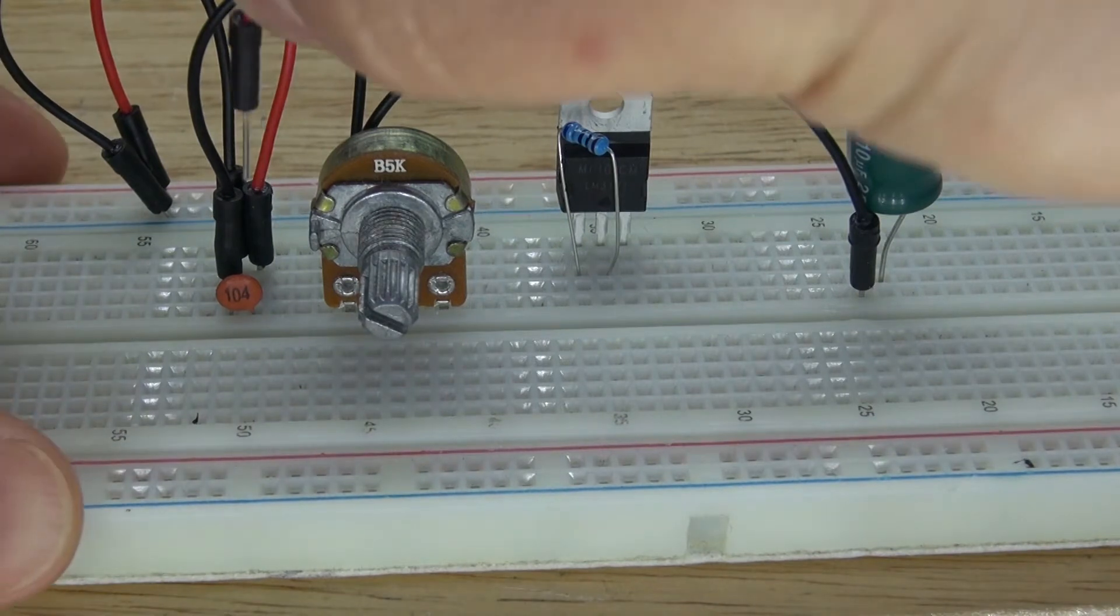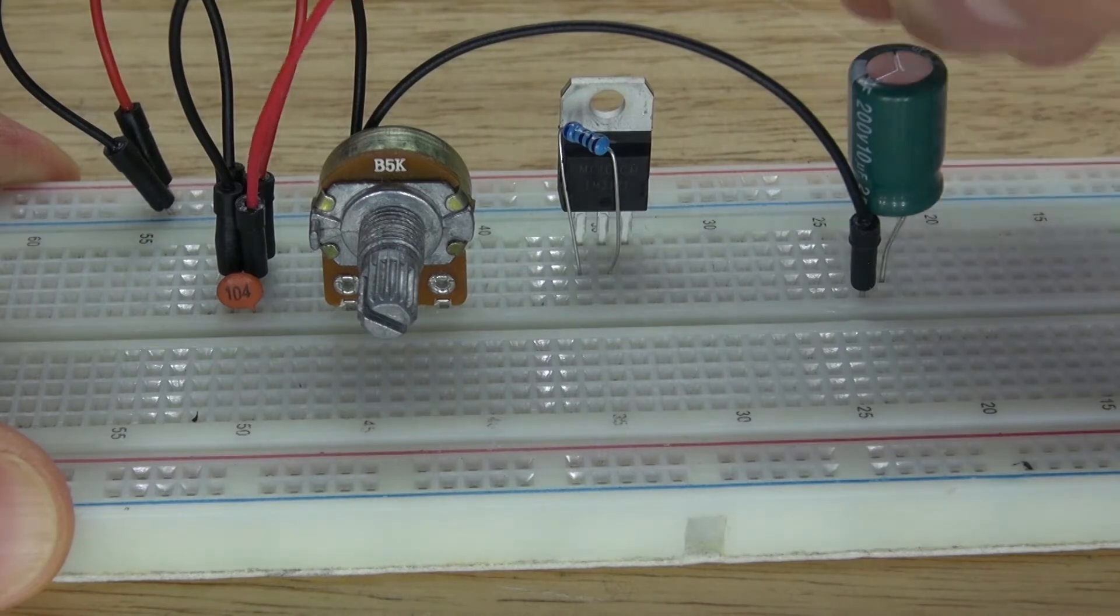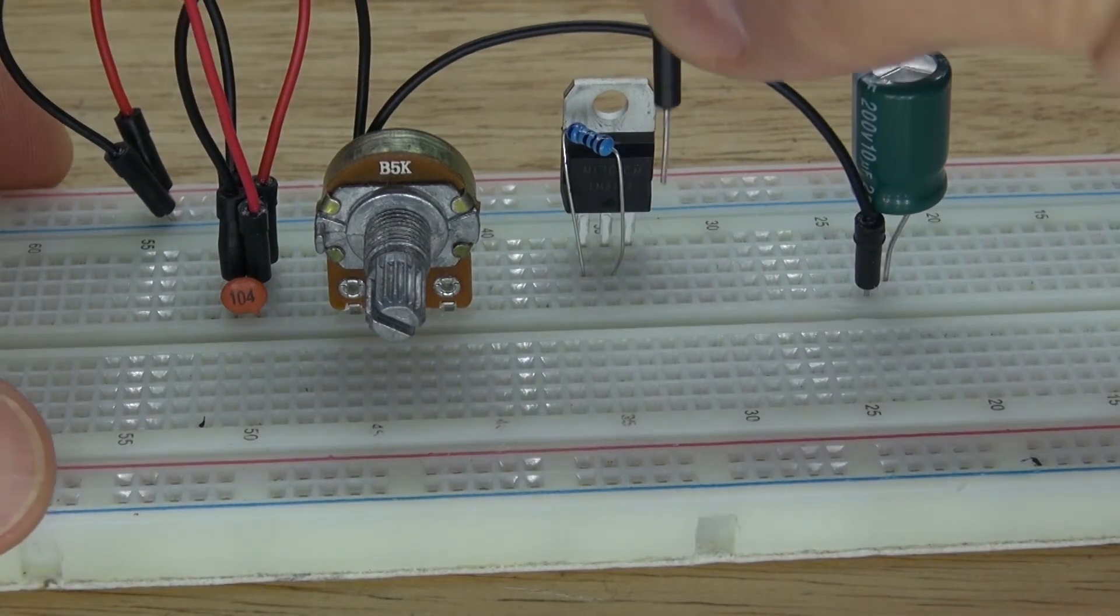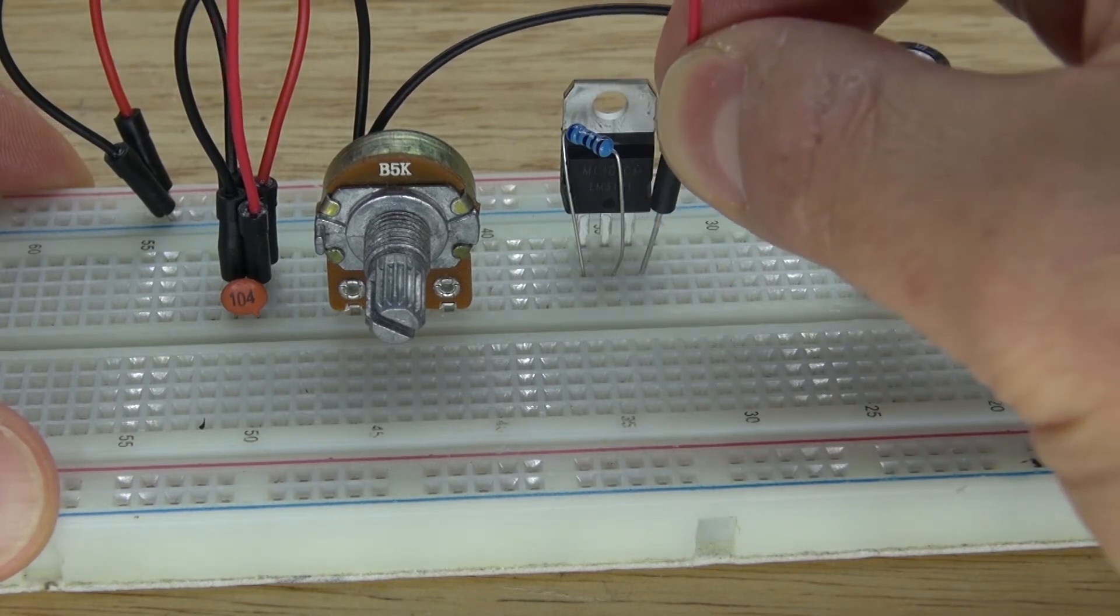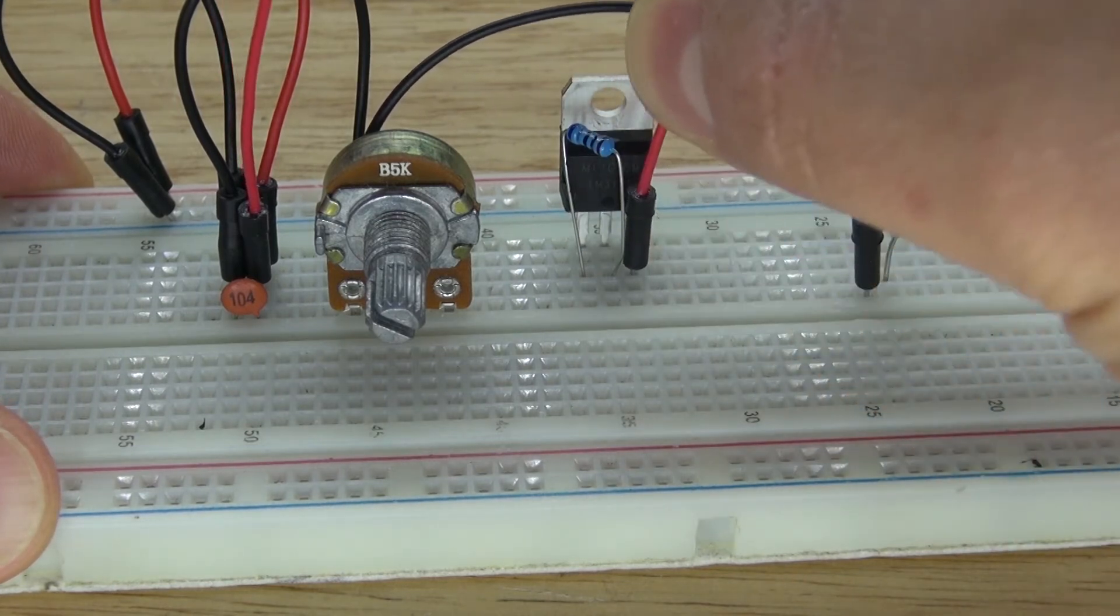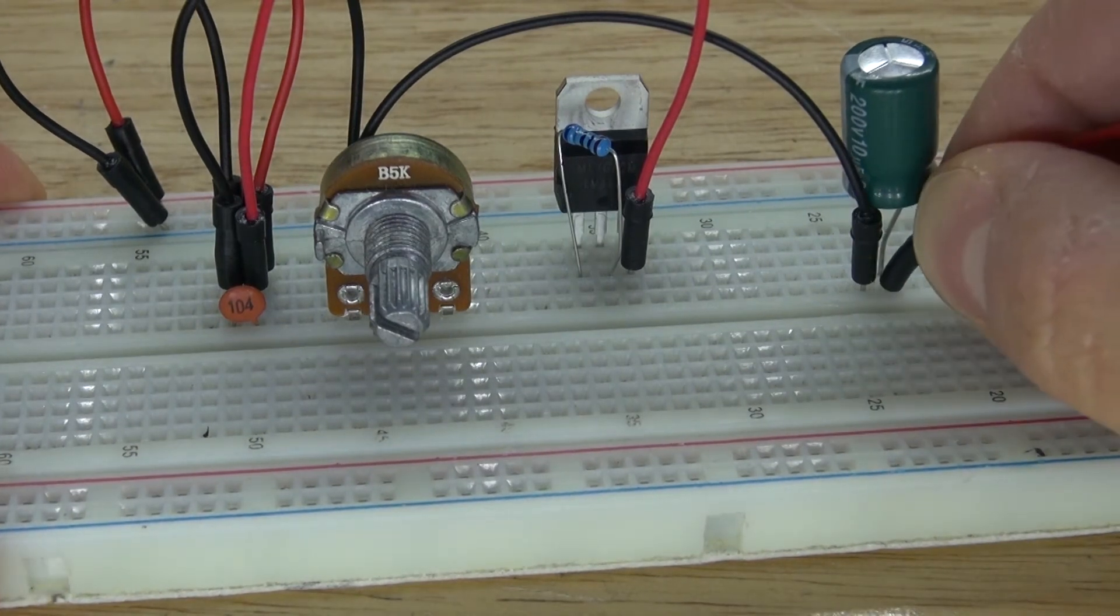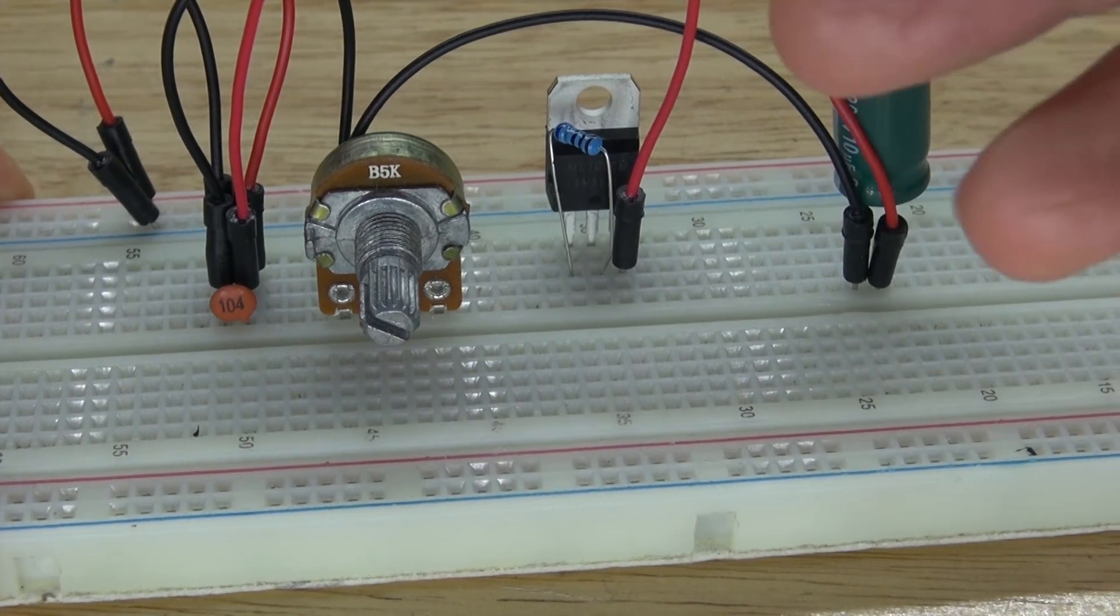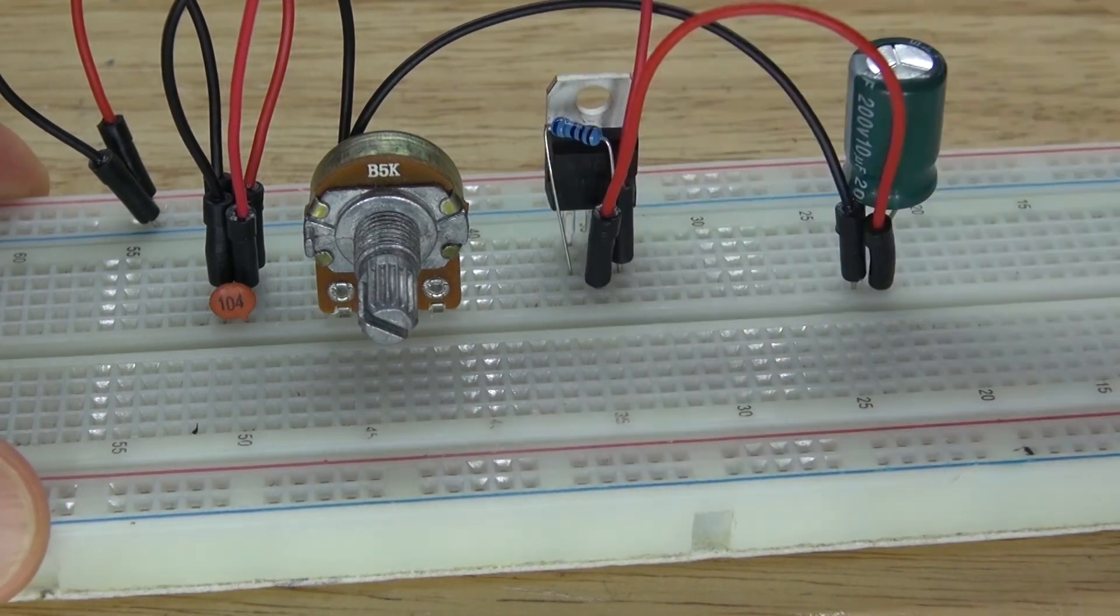Next, I'm going to take a positive jumper cable and connect that to the input pin of my transistor. Next, I'm going to connect the positive of the electrolytic capacitor through the positive jumper cable, and connect that to the output pin of my transistor.